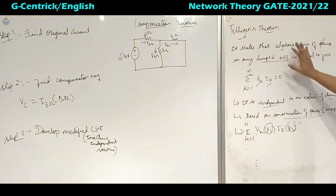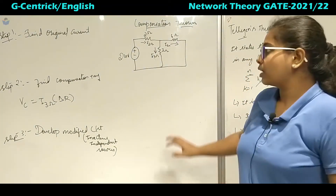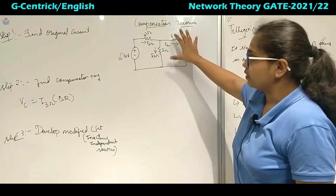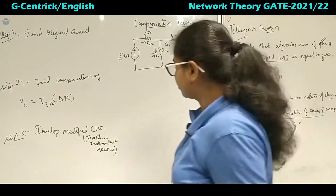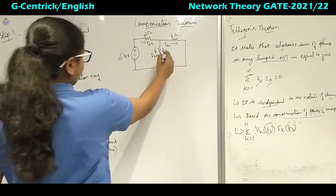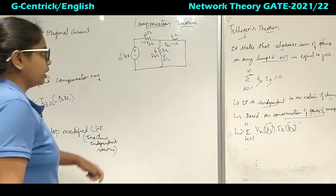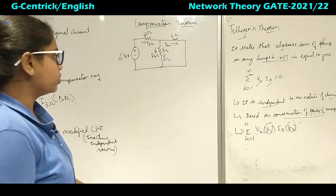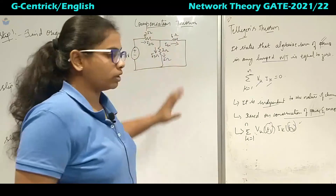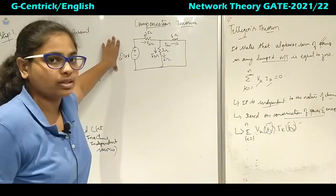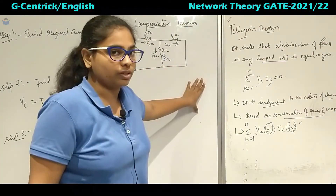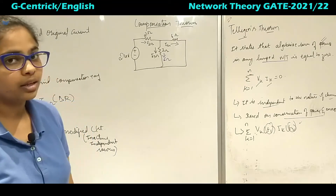The compensation theorem is also not very important for GATE but we will understand it through a problem. We have a circuit with 24 volts, 2 ohm, 6 ohm, and 3 ohm. If we change the 3-ohm resistor to 6 ohm, we apply the compensation theorem to find how the circuit currents are affected.